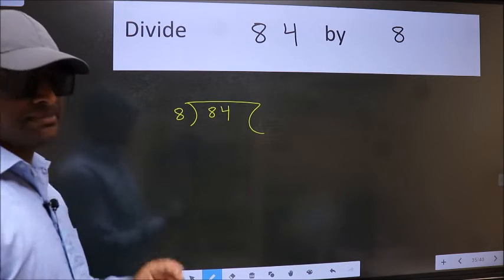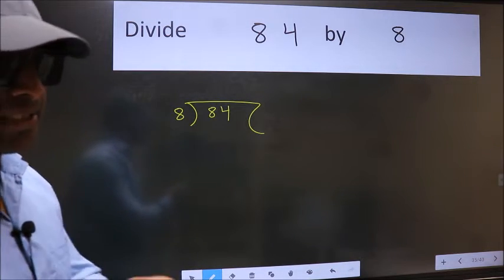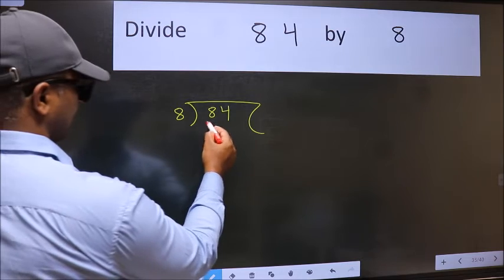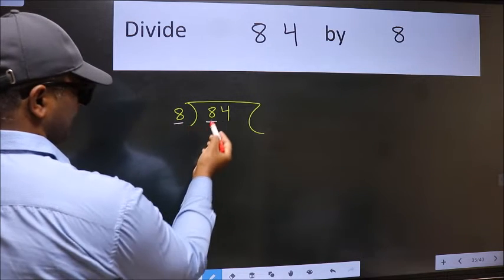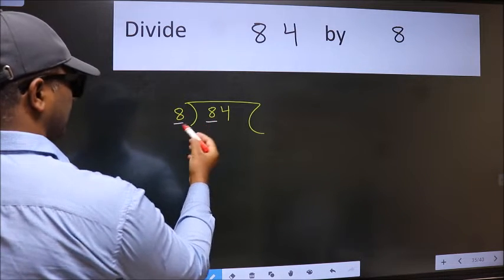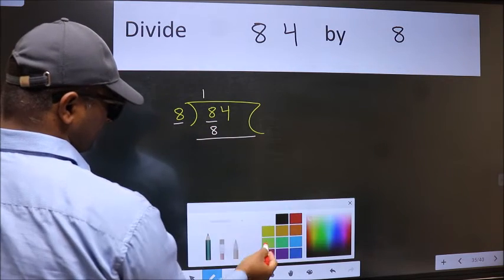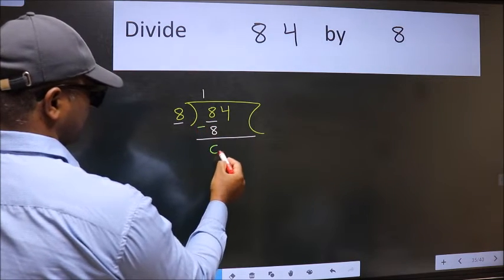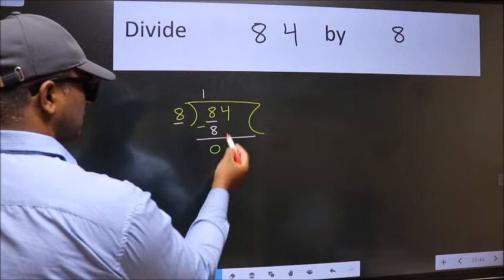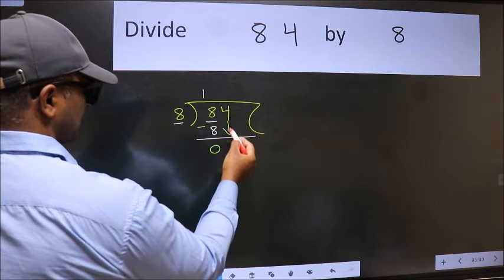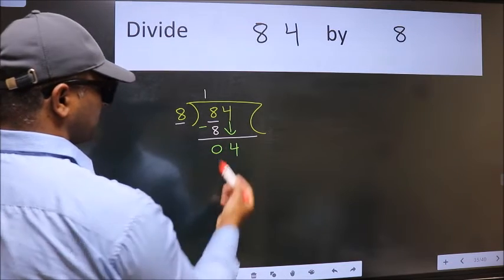This is your step 1. Next, here we have 8 and here 8. When do we get 8 in the 8 table? 8 once 8. Now we should subtract, we get 0. After this, bring down the beside number, so 4 down. After this step...